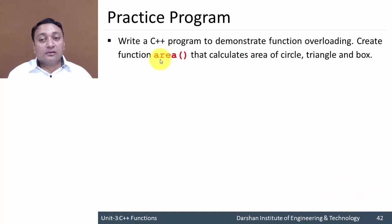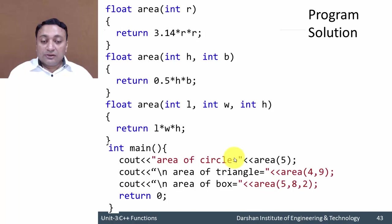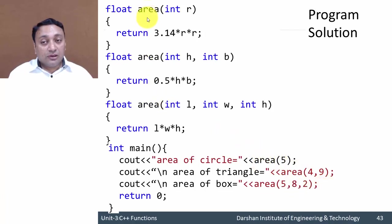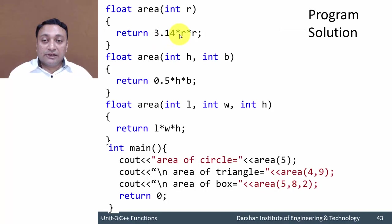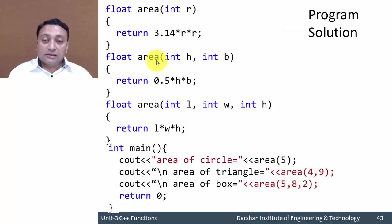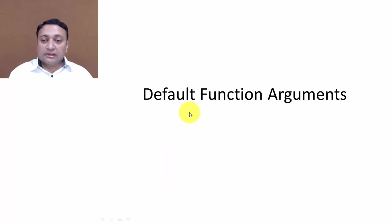You can practice a program to calculate the area of a circle, triangle, and box. In the solution, when calling 'area(5)', it is the compiler's responsibility to decide which function to call among the three available area functions. It will call the one-argument version and return a float result. The second 'area' call returns the area of a triangle, and the third returns l × w × h for the box.